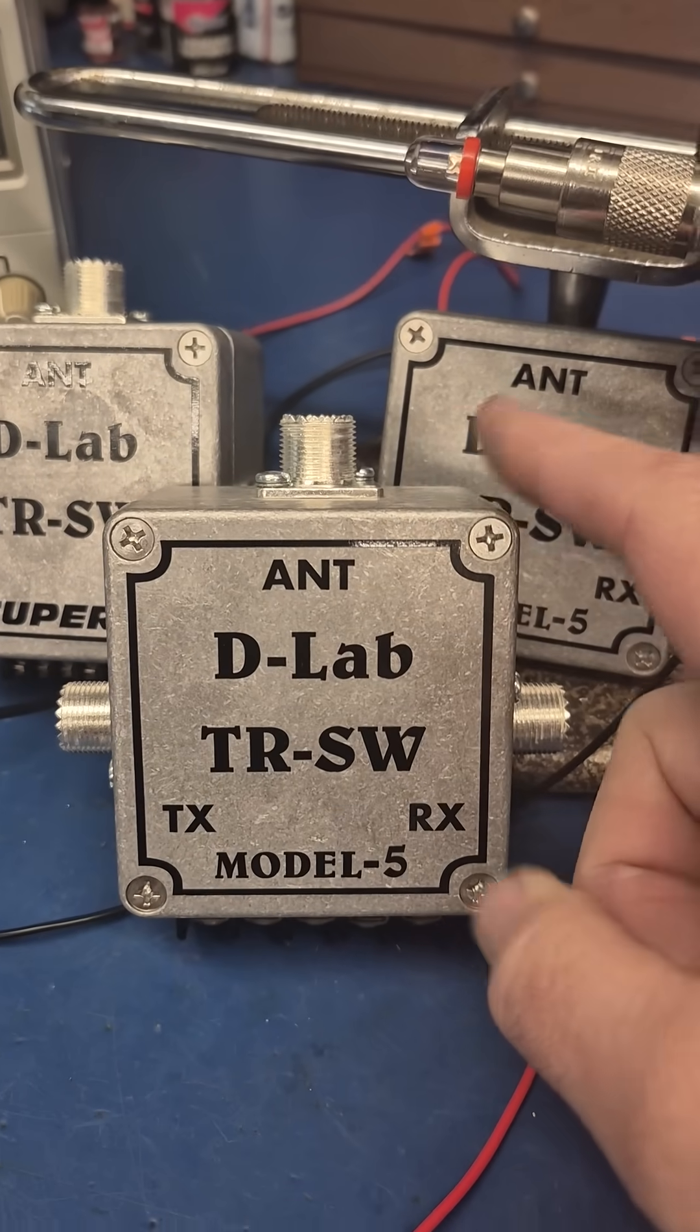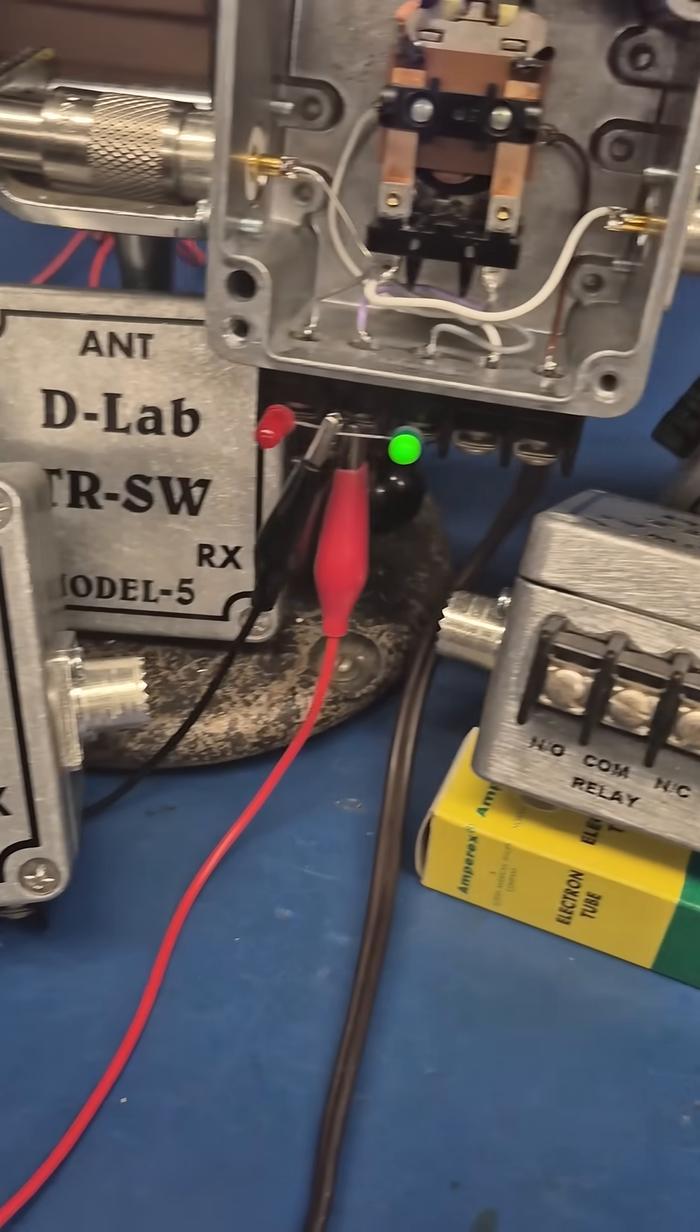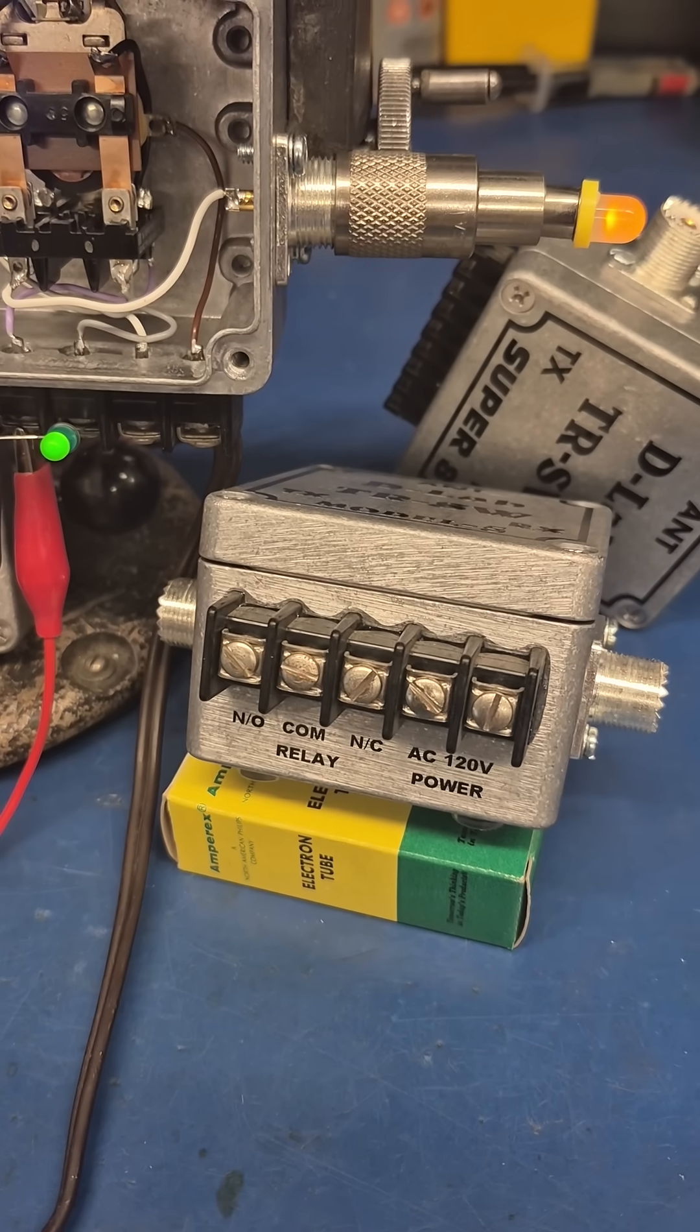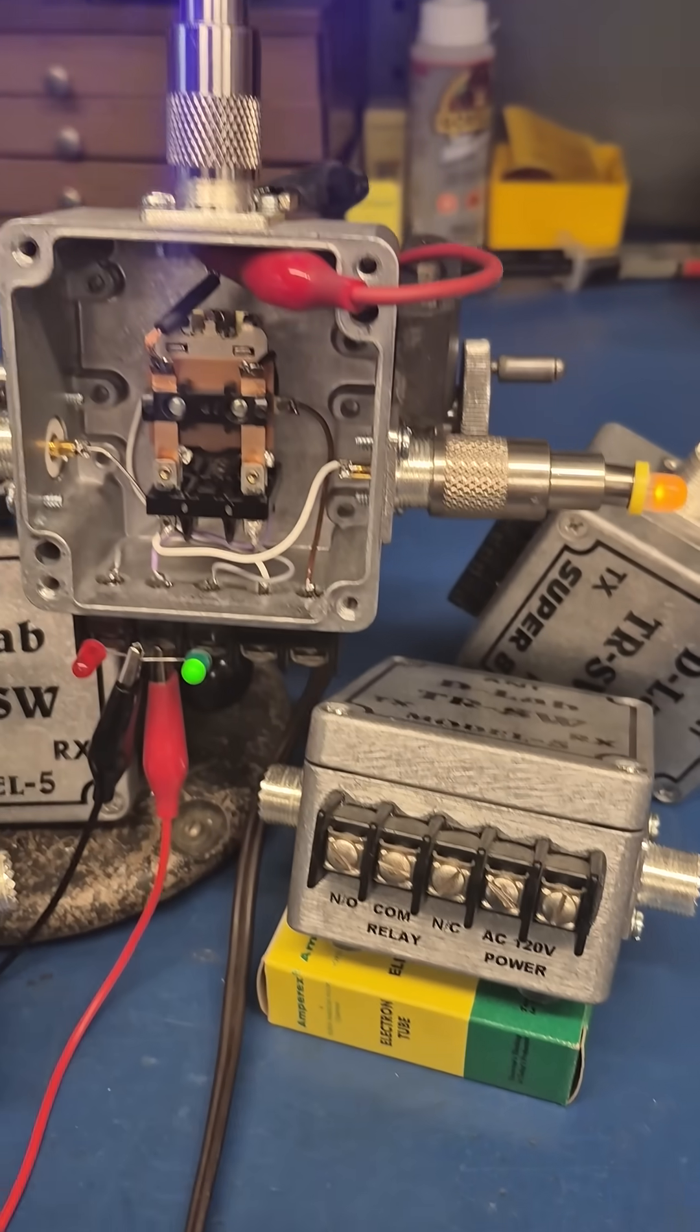Your antenna comes in here, transmitters here, receivers here. There's a terminal board for connection of the 120 volt control power and the relay that mutes your receiver.